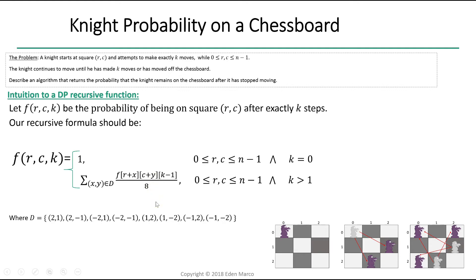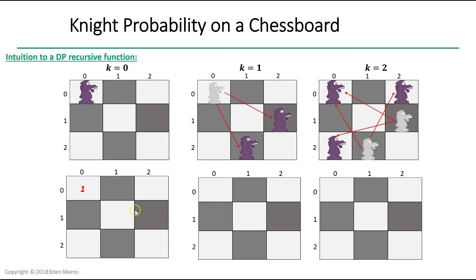To solve our problem, we just need to calculate f of r, c, and k and then summarize all the probabilities from all the entries within our board. Let's see how this is implemented in our example.